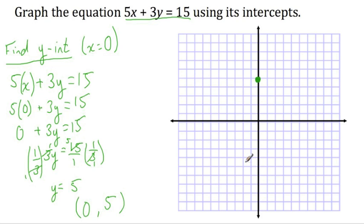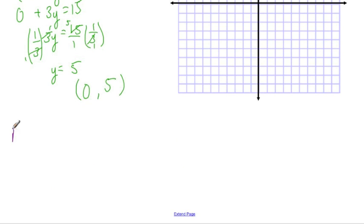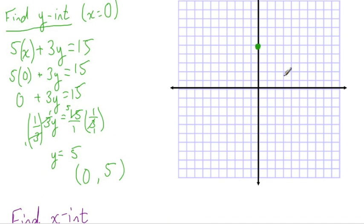Now I repeat the same process in order to find the x-intercept. So now I need to find the x-intercept, which will be the place where the line touches the x-axis. Which coordinate will we know when the line touches the x-axis?